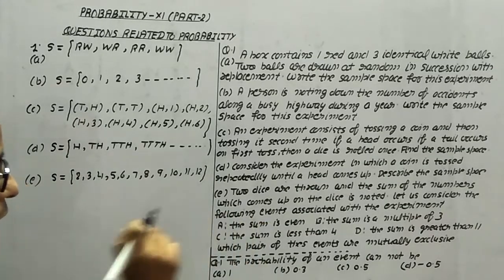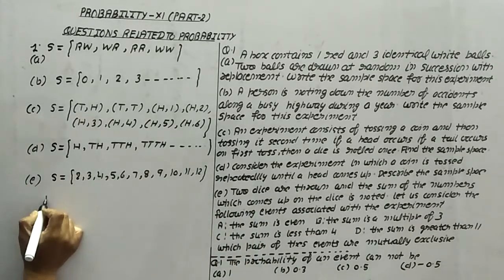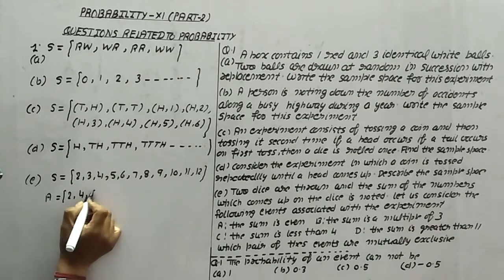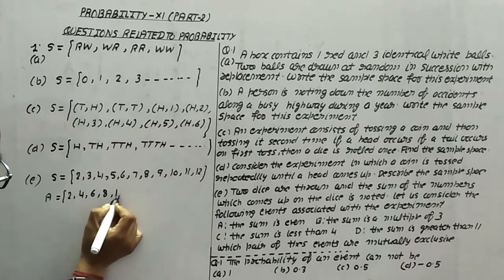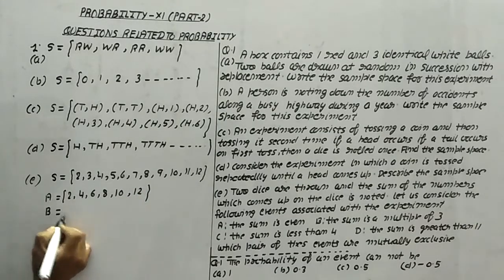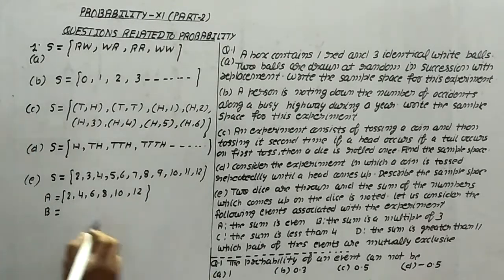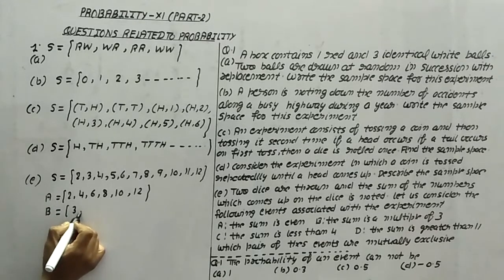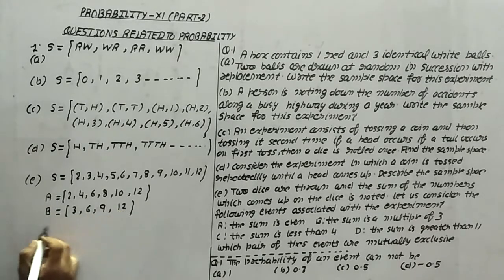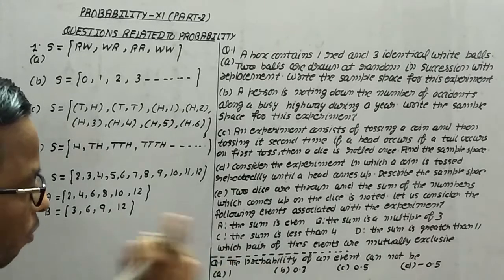A is the event that the sum is even, so A = {2, 4, 6, 8, 10, 12}. Event B is the sum is a multiple of 3, meaning B = {3, 6, 9, 12}.